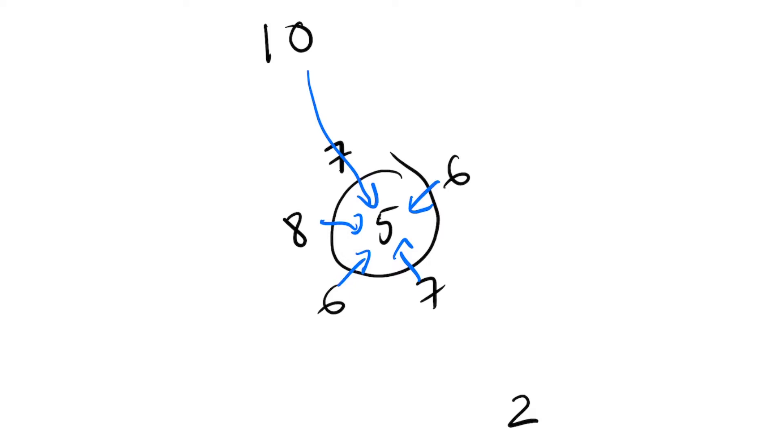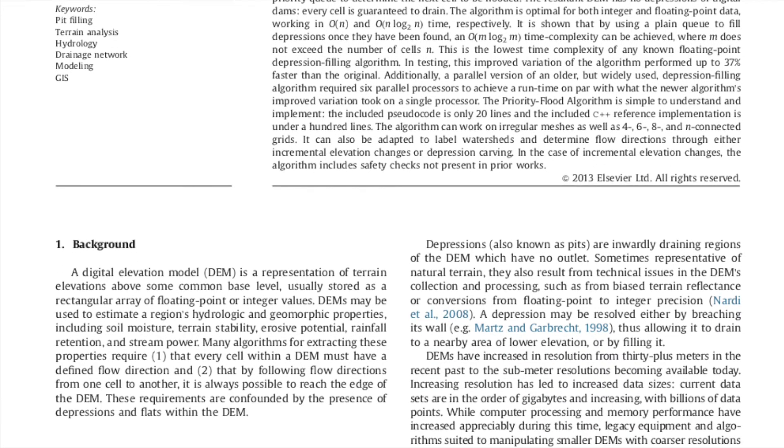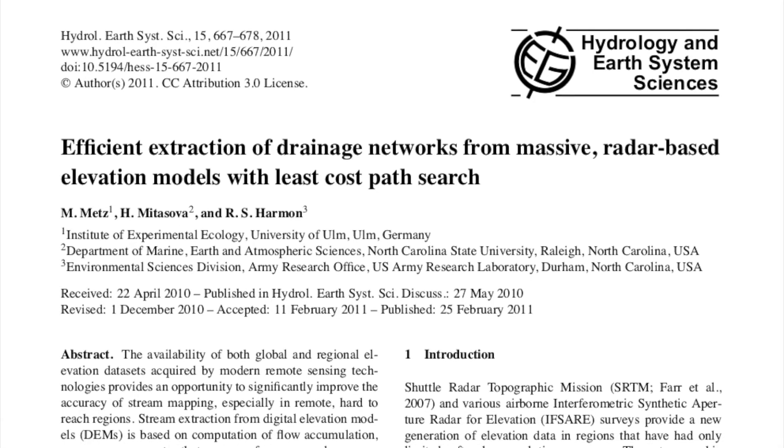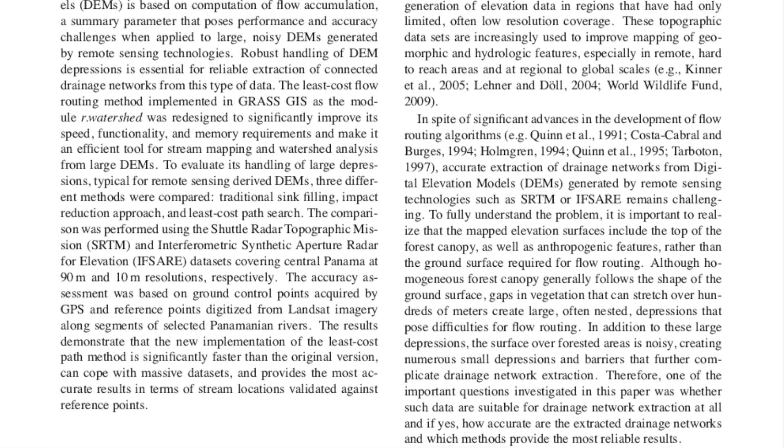But because of a sink, our flow direction model says that all this water goes to the sink and never gets out. In the handout, we point to two papers that show different ways to solve this problem. The first relies on filling sinks up to the level of the surrounding terrain, and the second implements a variation of the A-star algorithm for routing, which allows water to flow out of these sinks.